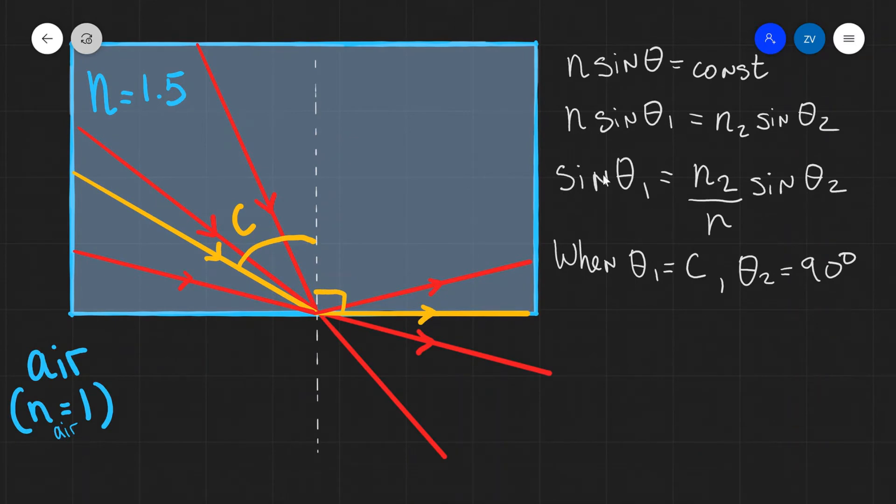This means that we can simplify our expression even more so let's rewrite this as sine of the critical angle which is theta 1 is equal to N2 divided by N multiplied by sine of theta 2 which is sine of 90 degrees. However remember that sine of 90 degrees is actually equal to 1. So this means that sine of the critical angle will be equal to N2 divided by N times 1 which I'm not going to write because any quantity multiplied by 1 is equal to the quantity itself.